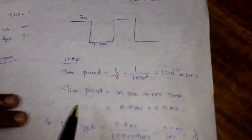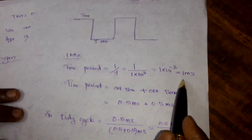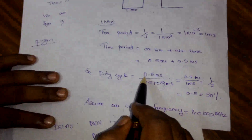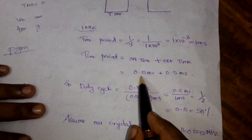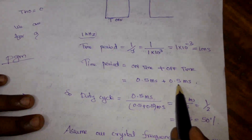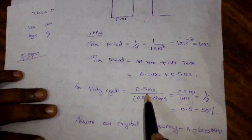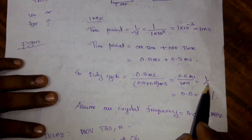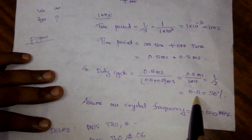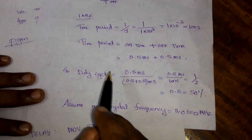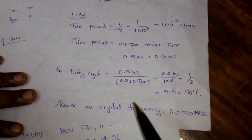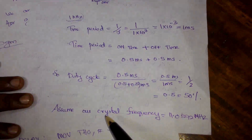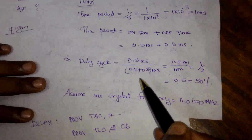To generate a 50% duty cycle, we divide 1 millisecond equally into two: 0.5 millisecond on-time plus 0.5 millisecond off-time. The duty cycle calculation gives 0.5ms / (0.5ms + 0.5ms) = 1/2 = 0.5, which is 50%. So our aim is to generate a 0.5 millisecond delay using the microcontroller. We are going to use Port 1 for generating the square wave.